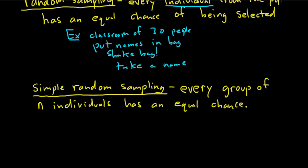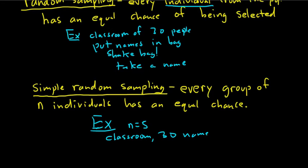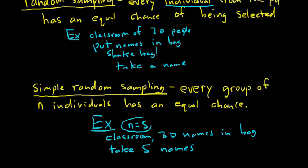An example: say you were taking a sample of size 5, so n is 5. You still have your classroom with 30 names in a bag. If you take 5 names from the bag at random, this would be a simple random sample, because every single group of 5 people in the class has an equal chance of being selected.